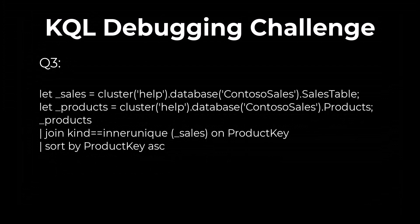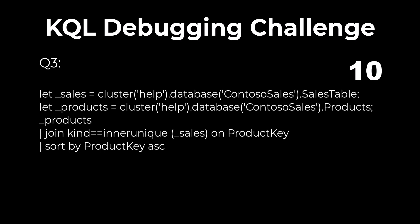Question 3. Identify the bug in this query. When we join datasets and define the kind of join we want, we use a single equals. In this example, there's a double equals, which will throw an error.